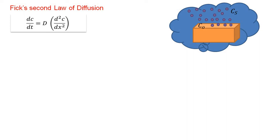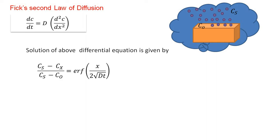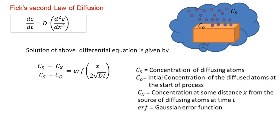This Second Law of Fick is a differential equation. When we solve this equation, the solution looks like this: (Cs - Cx) / (Cs - C₀) = erf [ x / (2√(D·t)) ]. Each term: Cs is the concentration of the diffusing atoms at the surface; C₀ is the initial concentration of the diffusing atoms at the start of the process; Cx is the concentration at some distance x from the source of diffusing atoms at time t; and erf is the Gaussian error function.